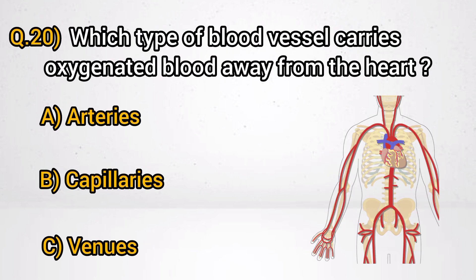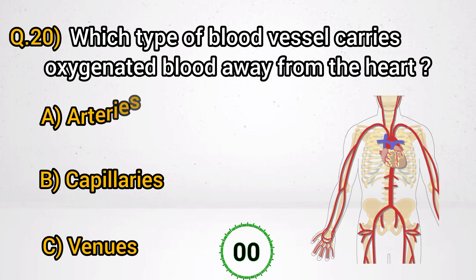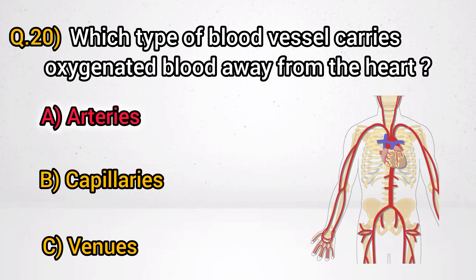Question 20: Which type of blood vessel carries oxygenated blood away from the heart? Answer A: Arteries.